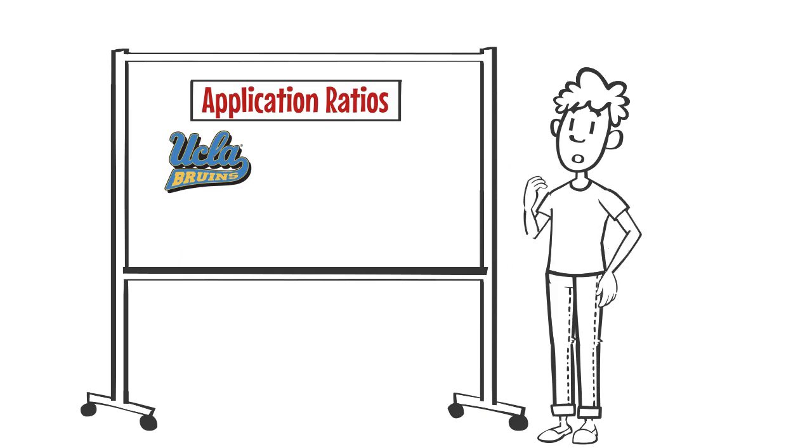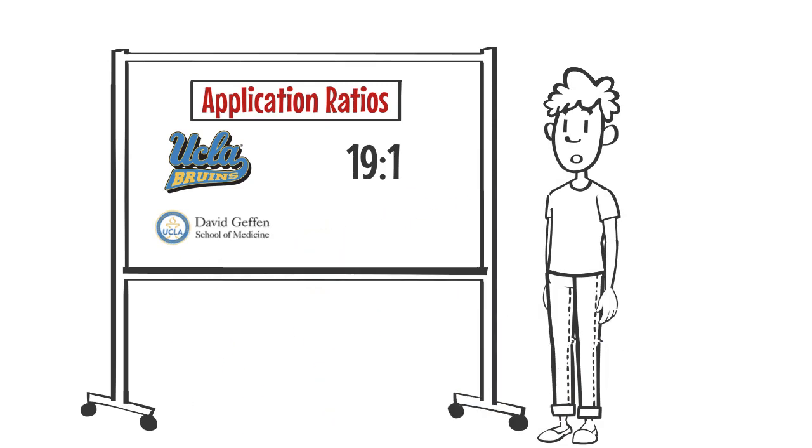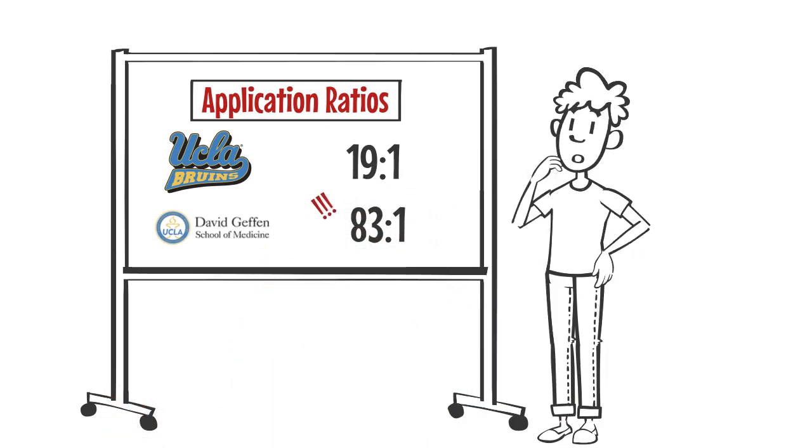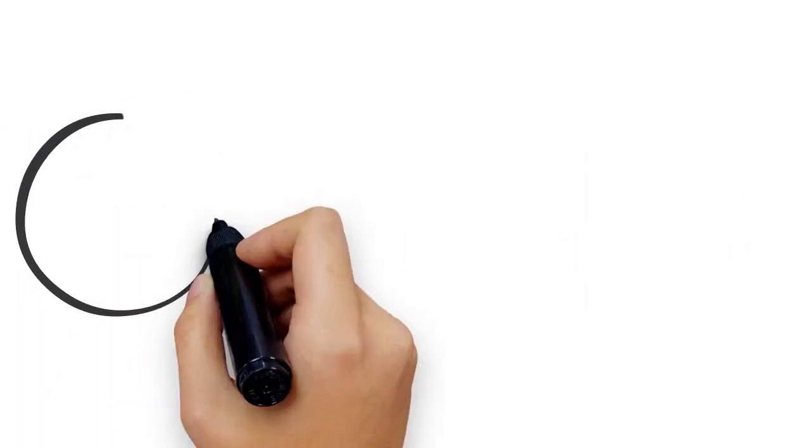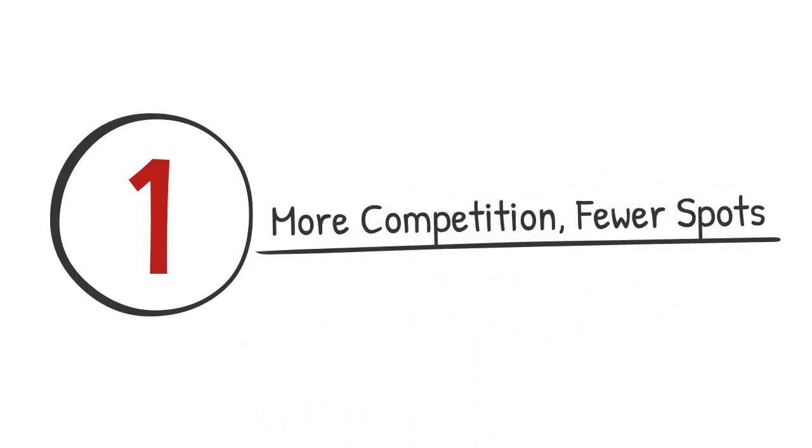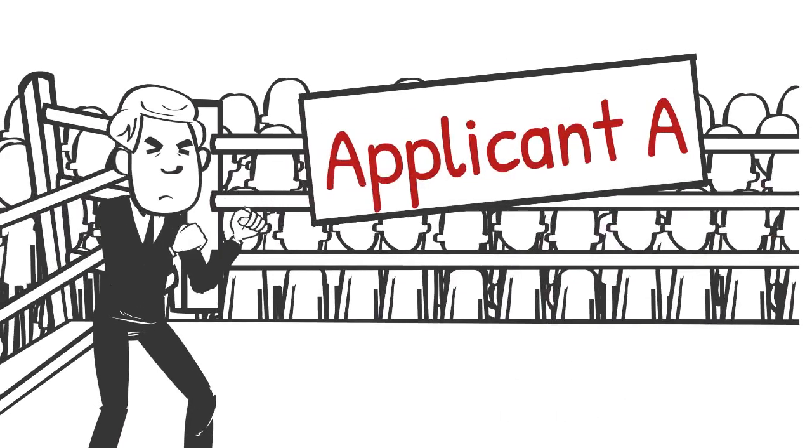UCLA undergrad gets 19 applications for each spot in their incoming class. UCLA med school, 83 applications for each spot. So the first reason it's so damn hard to get into med school is that there is more competition for fewer spots.